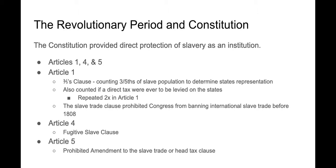Article 1 talks about the three-fifths clause, which counted three-fifths of the slave population to determine whether or not that could increase a state's representation in the House of Representatives. It also counted a head tax to be levied on states that had slaves, and that tax gets mentioned again in two other parts of Article 1. It also said that Congress would not be able to ban the international slave trade before 1808. Article 4 is the Fugitive Slave Clause, which basically says slaves have to be returned to their masters. And Article 5 prohibited an amendment to either the taxation or the slave trade clauses.